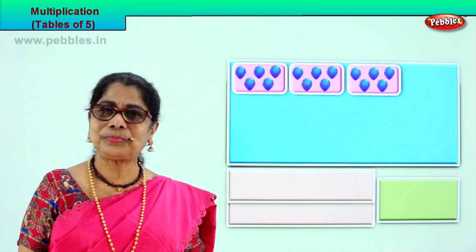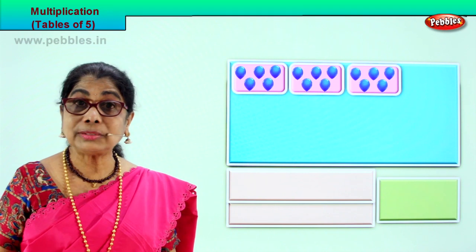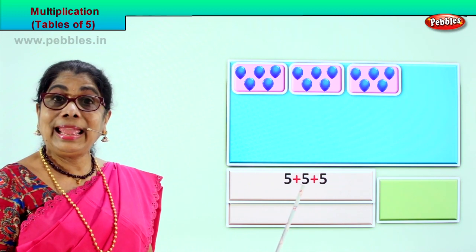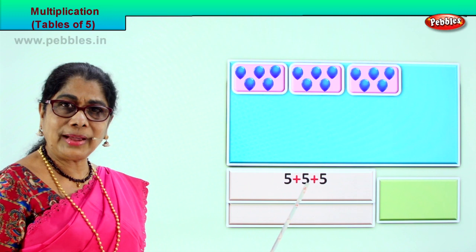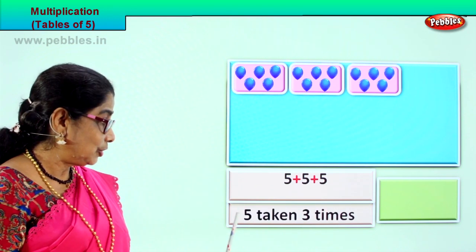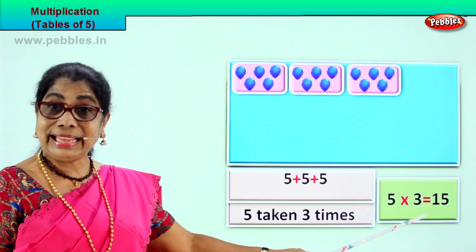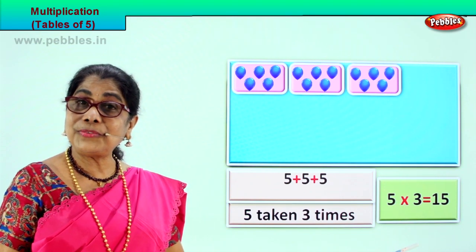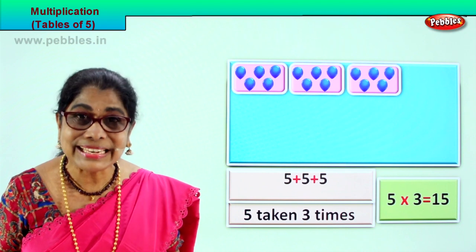Shall we look at another grouping of five? There are three boxes, five, five, five. Multiplication is repeated addition, so we add five plus five plus five. Five plus five is ten, ten plus five is fifteen. How many times has five been taken? Three times. Five into three is equal to fifteen. Five threes are fifteen. Very good.